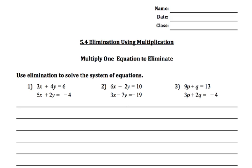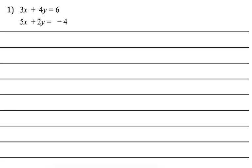They structure this so that it's staged, so we're going to multiply one equation to eliminate. By the end of all of these notes, you'll multiply both equations, so that they have to match up. All of these instructions are pretty much the same: use elimination to solve the system of equations. So we'll jump into this first problem here.